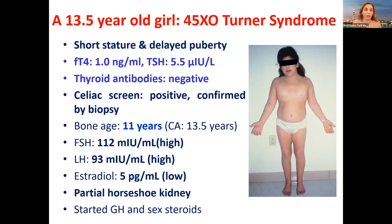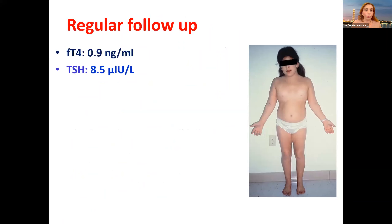We started growth hormone and sex steroids and began follow-up. On regular follow-up, she came with normal T4 but TSH jumped to 8.5 — remember it was previously 4.5. In the previous stage we had not started treatment because antibodies were negative; we were starting growth hormone and sex steroids; she had a late diagnosis and was put on a gluten-free diet.